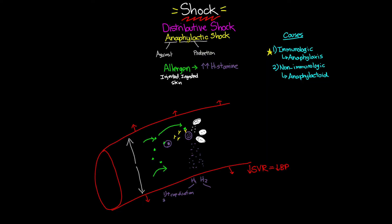The next H1 response is an increase in capillary permeability. The cells in the endothelial lining begin to open up, causing fluid from the intravascular space to leak out of blood vessels. When this fluid leaks out and collects in the surrounding tissue, it causes swelling — and this is happening throughout the entire body, so you get systemic swelling.